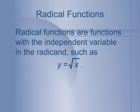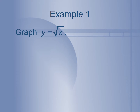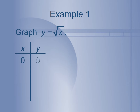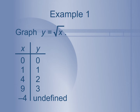This is going to be your typical graph, your parent graph, and any other function we look at would be a translation of this graph. Let's look at what the parent graph of y equals the square root of x is. If I plug in some values — picking perfect squares to get nice numbers — if I plug in 0, I get 0; plug in 1, I get 1; plug in 4, I get 2; and 9 gives 3. If I plug in a negative number, I get undefined, because I cannot take the square root of a negative number.